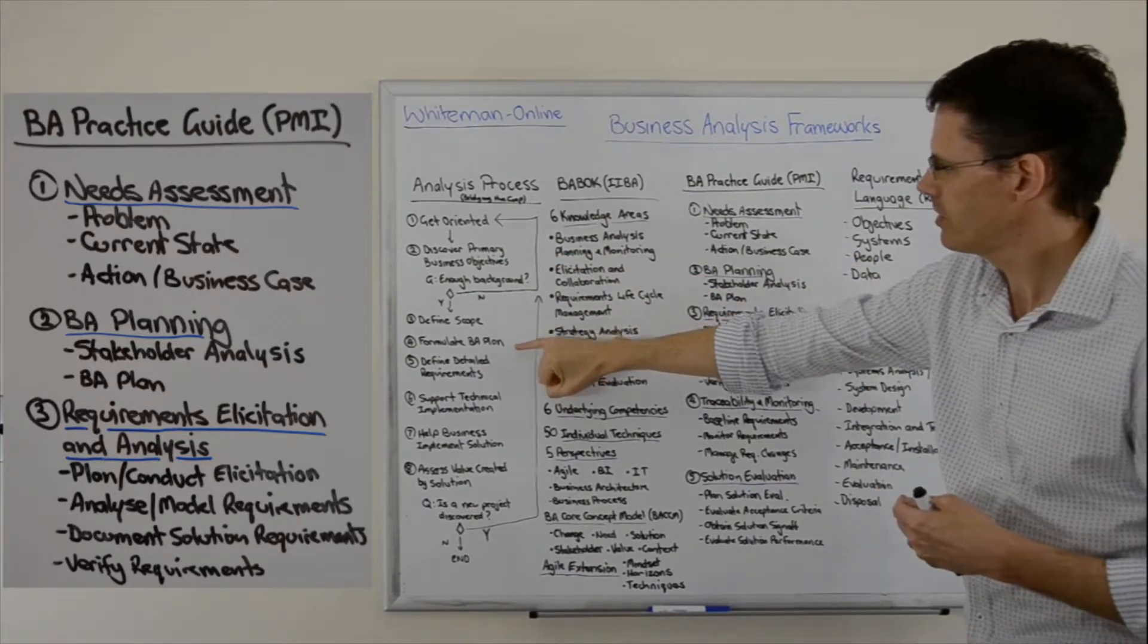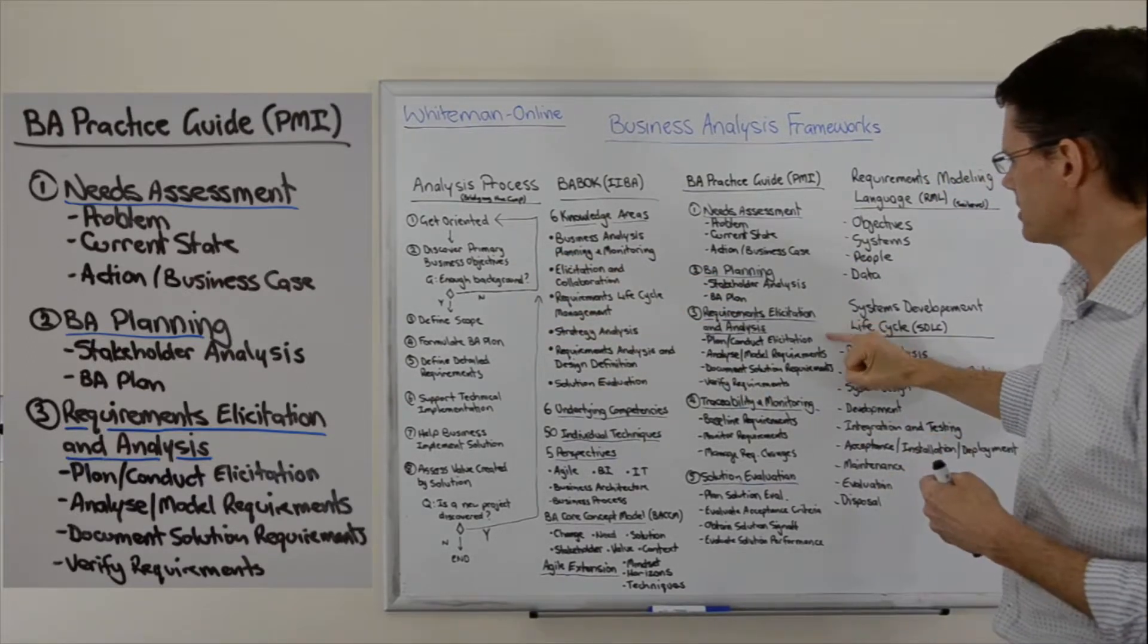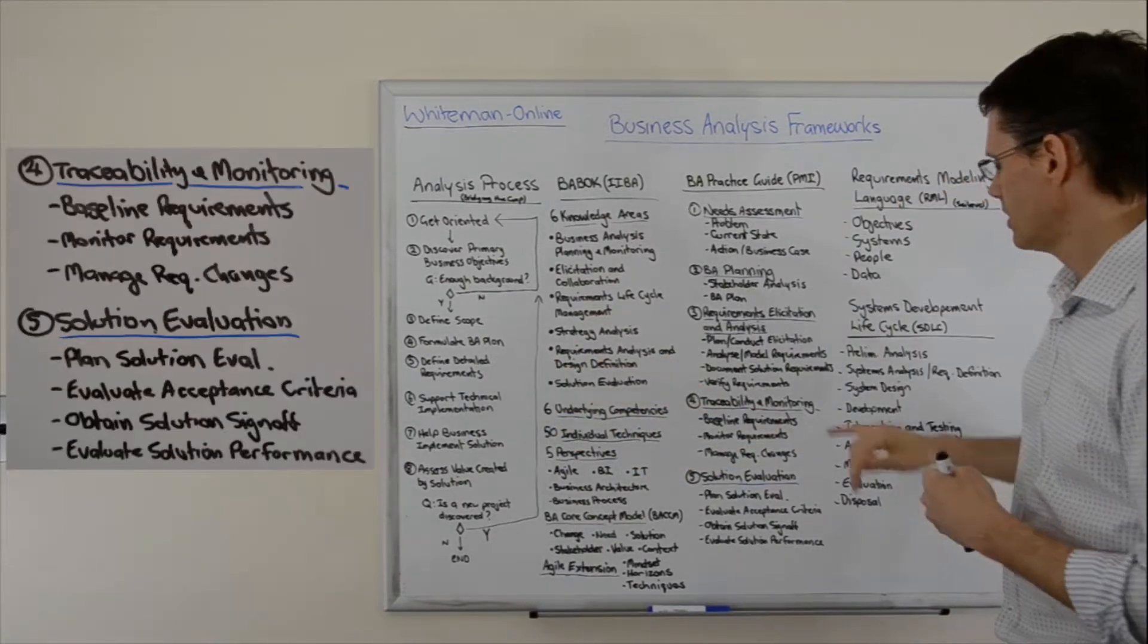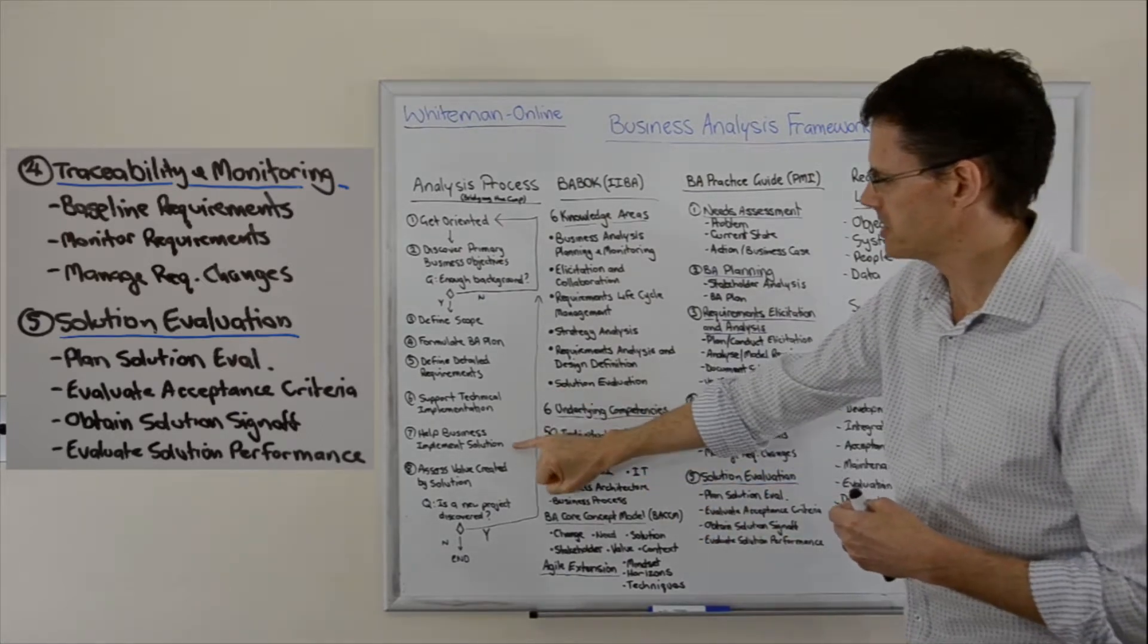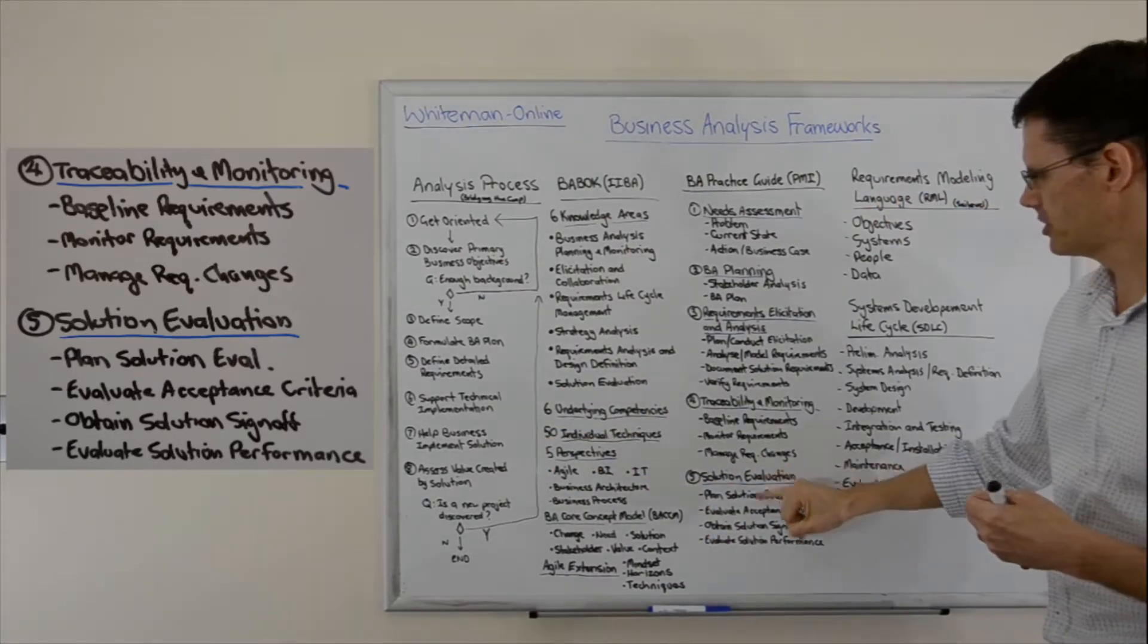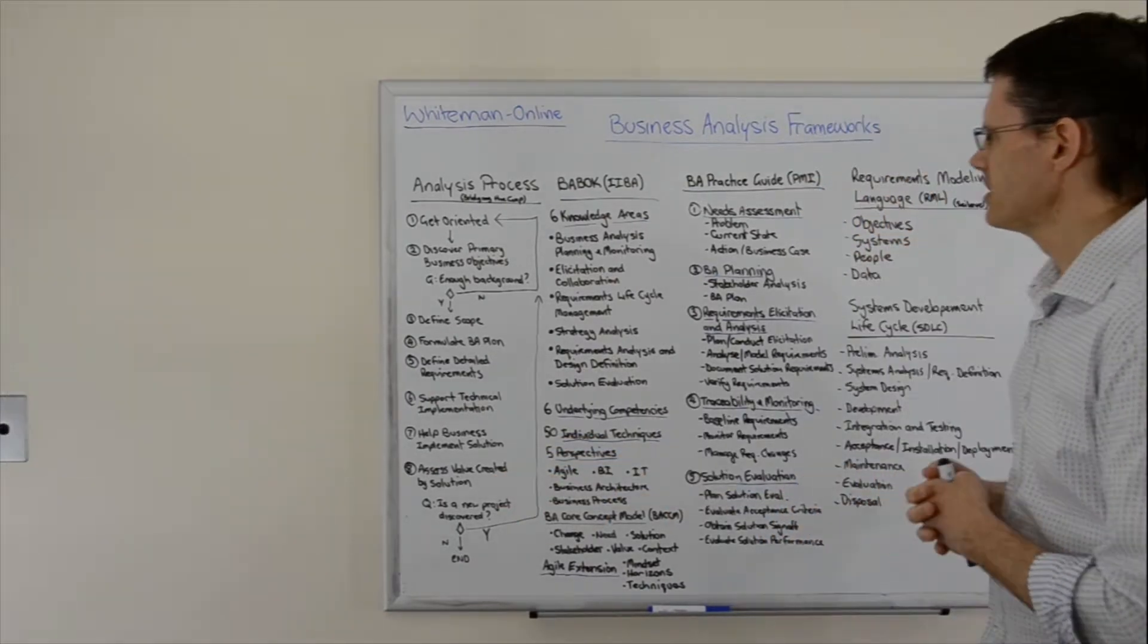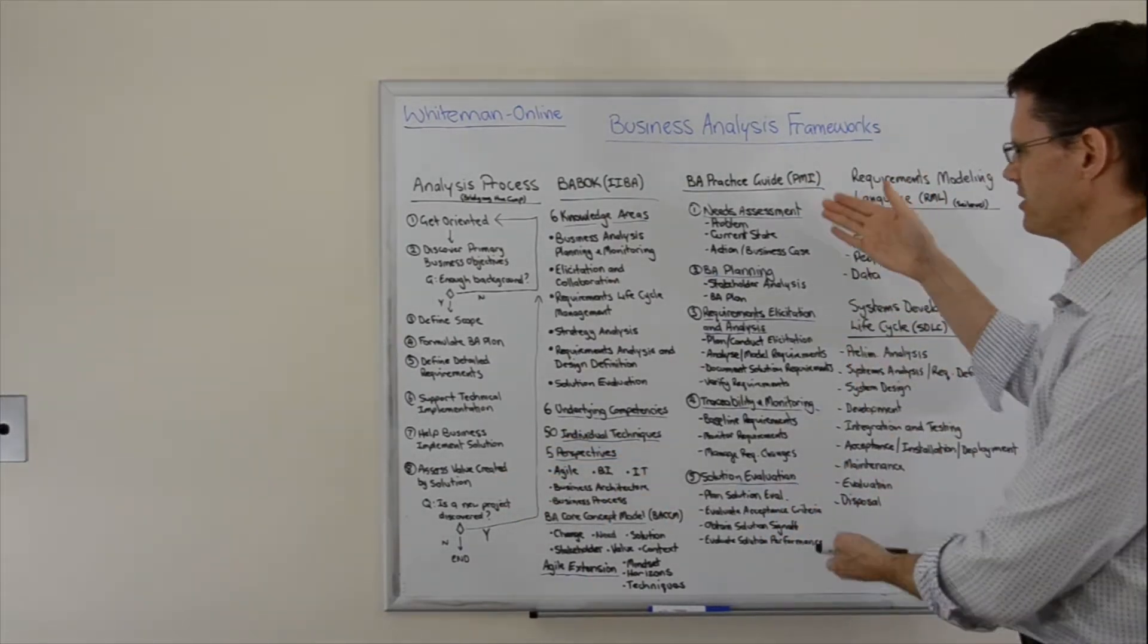Business analysis planning, requirements solicitation and analysis—again, defining detailed requirements. Traceability monitoring is through the implementation, and then solution evaluation where we assess the value created. Essentially it does the same thing, just in a different layer.